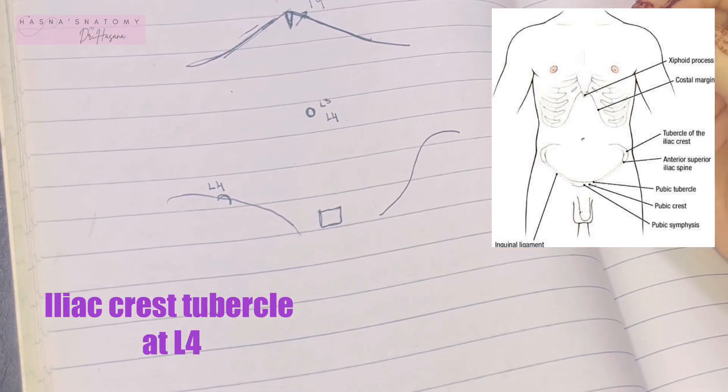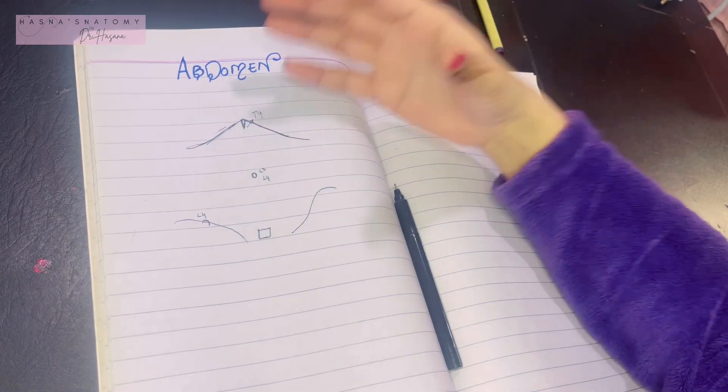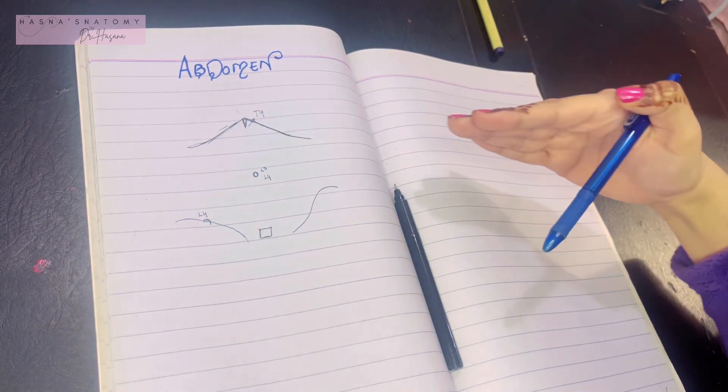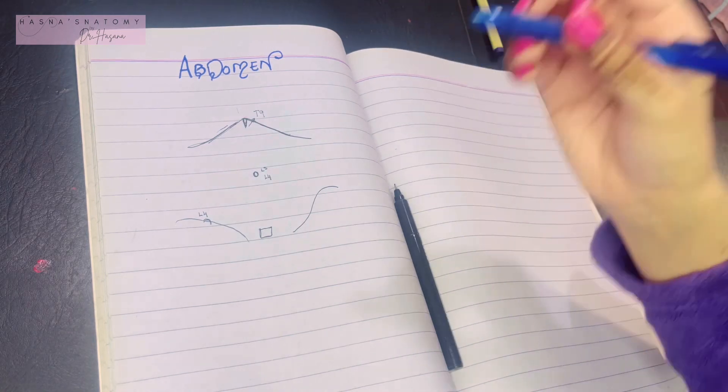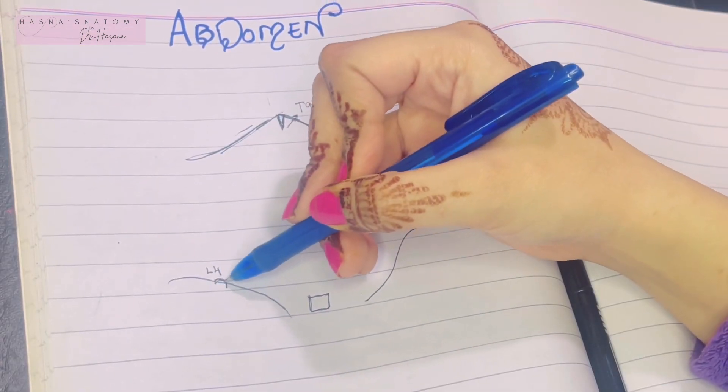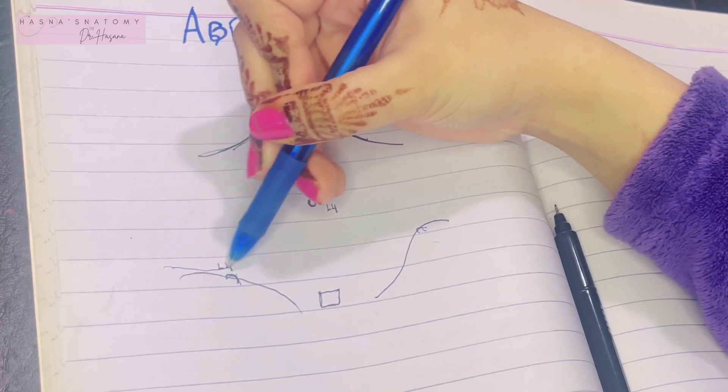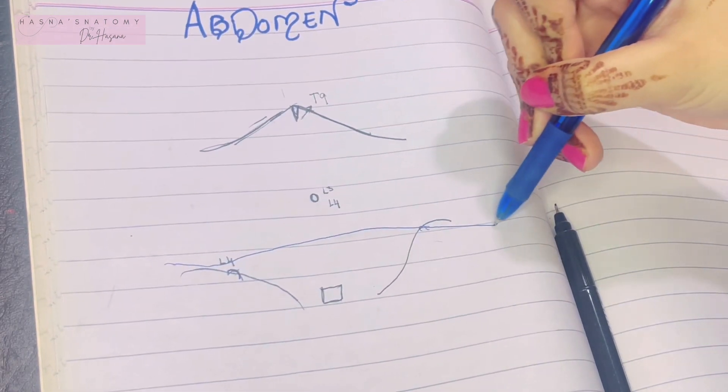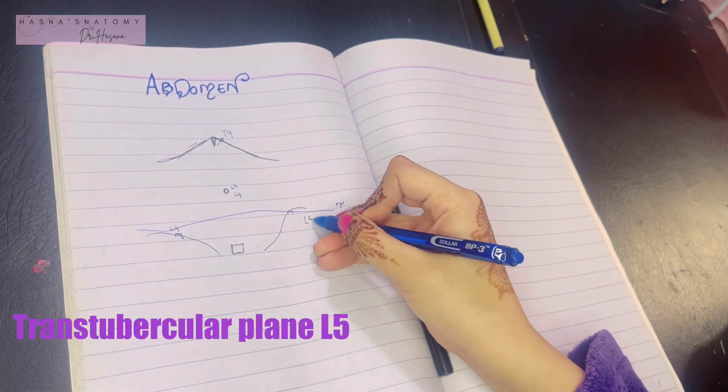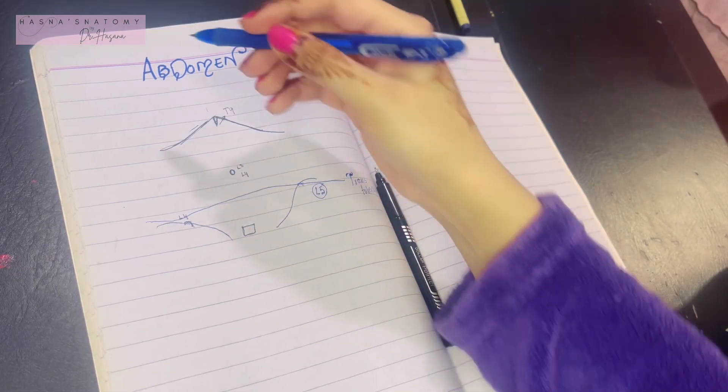Now that we've discussed various important landmarks, we're going to discuss a couple of planes of the abdomen. What are planes? Planes are basically imaginary lines that are passing through specific areas. Let's talk about the first plane we have on the abdomen: the plane that passes through the two tubercles, or the highest points of the iliac crests. This is known as the trans-tubercular plane. The trans-tubercular plane lies at the level of L5 vertebra.